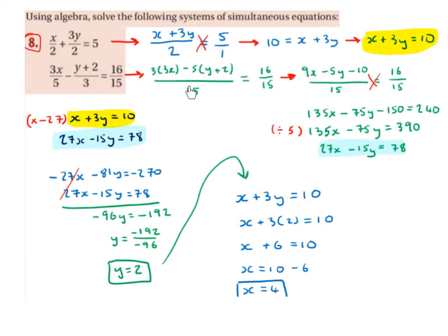And 3 into 15 goes 5 times, and I'm going to multiply that minus 5 by the numerator which is y plus 2. So I've got y plus 2 with brackets around it, and this is still equal to 16 over 15. Then 3 by 3x is 9x minus 5 by y is minus 5y minus 5 by 2 is minus 10. This is still over 15 and equal to 16 over 15.